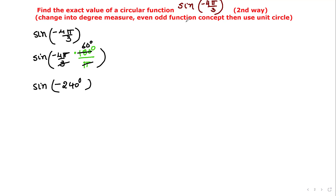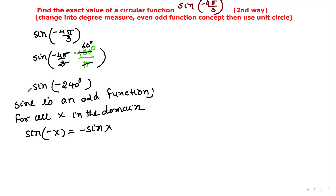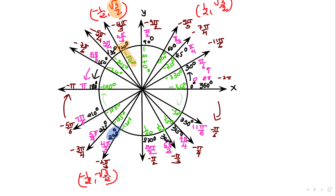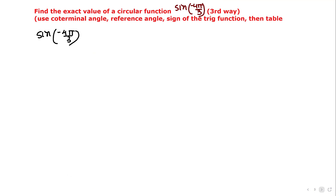Now we will use the definition of even and odd functions. Sine is an odd function — for all x in the domain, sine(-x) equals -sine(x). So this function we can write as -sine(240°). Sine(240°) equals -√3/2, and we carry the negative sign down. Negative times negative is positive, so our final answer is positive √3/2.